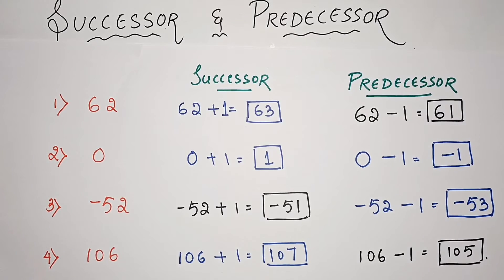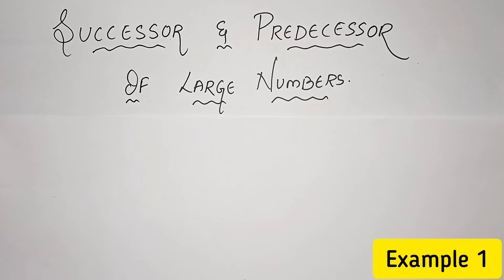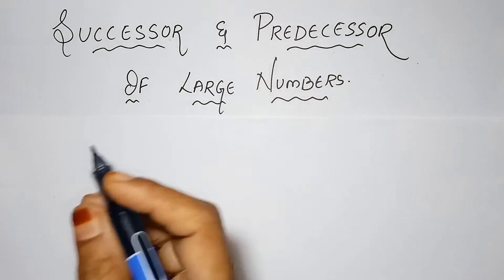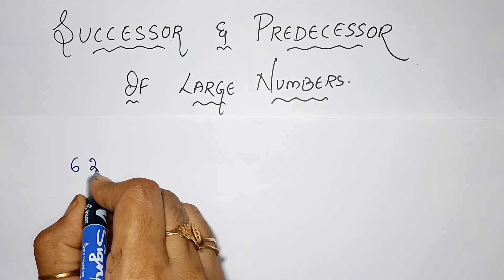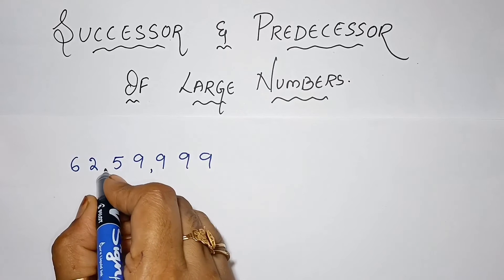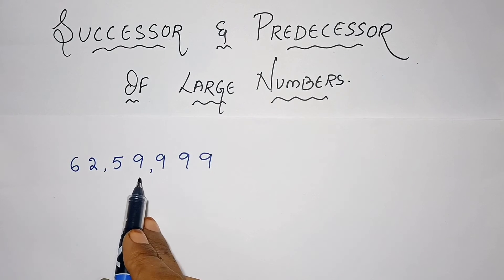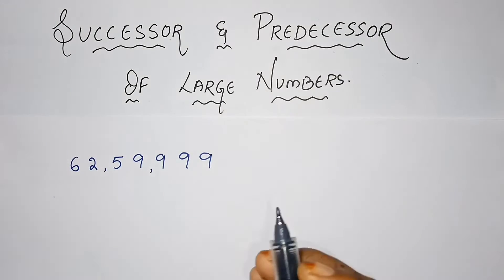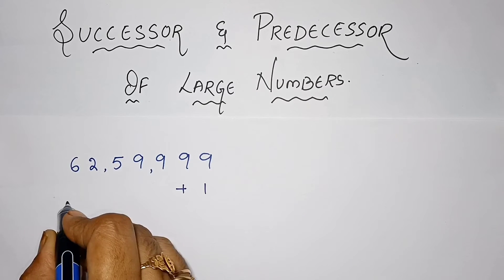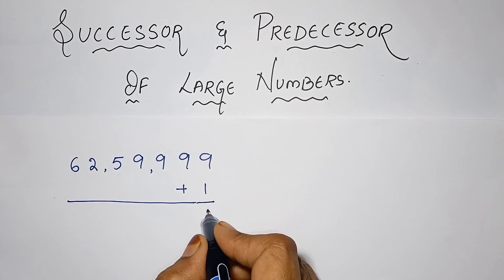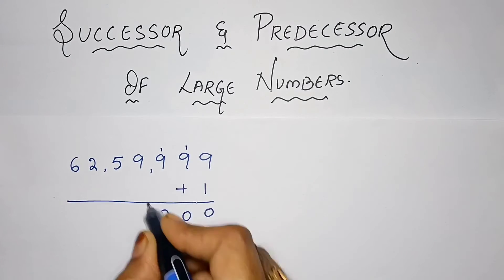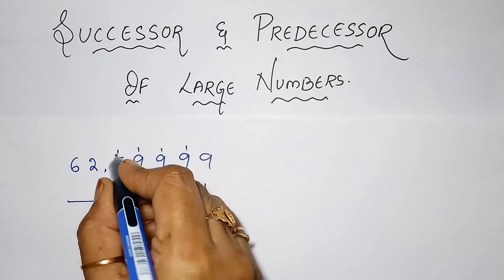Hope you understood this. Now let us see the successor and predecessor of large numbers. Let me take an example: 62,59,999. If you want the successor, we will just add 1. So 9 plus 1 is 10 — write 0, carry 1; again 10, carry 1; again 10, carry 1; again 10, carry 1.